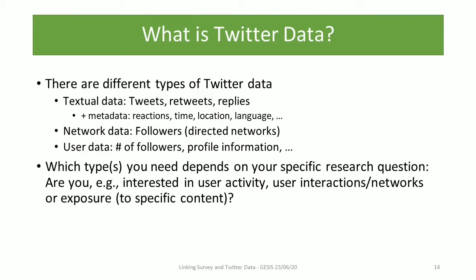The first topical part of the session will be on planning your research. Twitter data is not a monolithic thing — there are different types. The first thing that usually comes to mind is textual data: tweets, retweets, replies, and the text, images, and videos they can contain. Importantly, you also get a whole trove of metadata for the tweets — for example, how many reactions they got, at what time they were posted, where they were posted, and which language. Another popular type of Twitter data is network data: relationships between people — who follows whom.